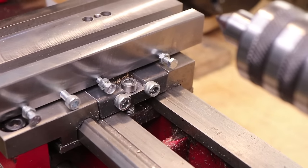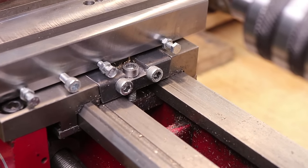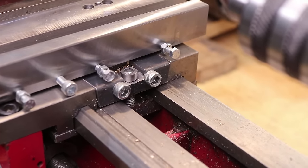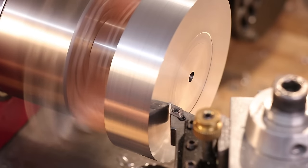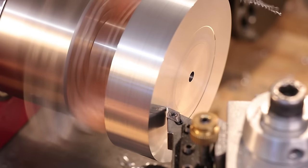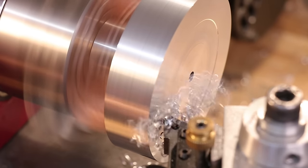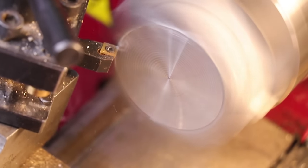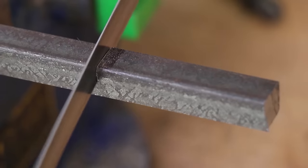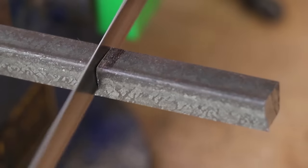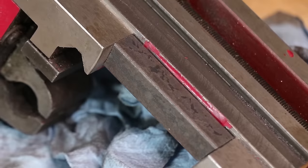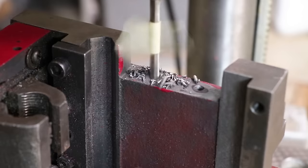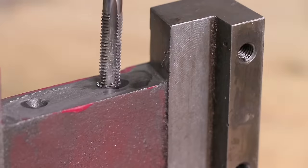Upgrade number four would be a carriage lock. This is a very useful mod when you need to face large diameter stock and you need to get a constant depth of cut and a good finish. Without one the carriage tends to be pushed back when turning and you tend to get a very inconsistent cut. Now adding one is very simple. You get some bar stock of steel and cut it and file it down so it fits in the gap in the carriage. You then bolt that piece of metal to the carriage.